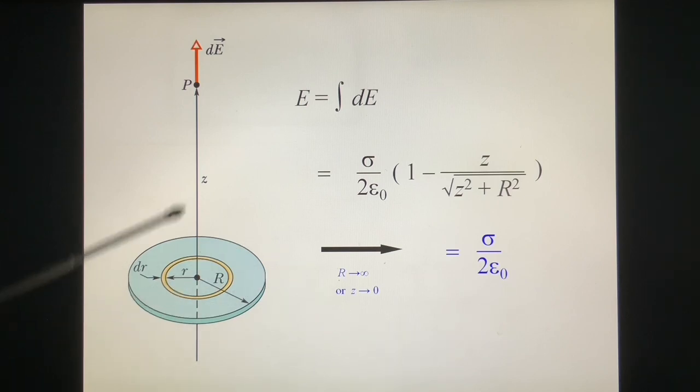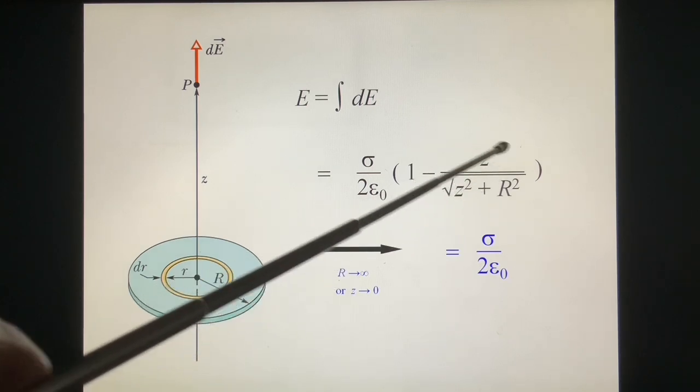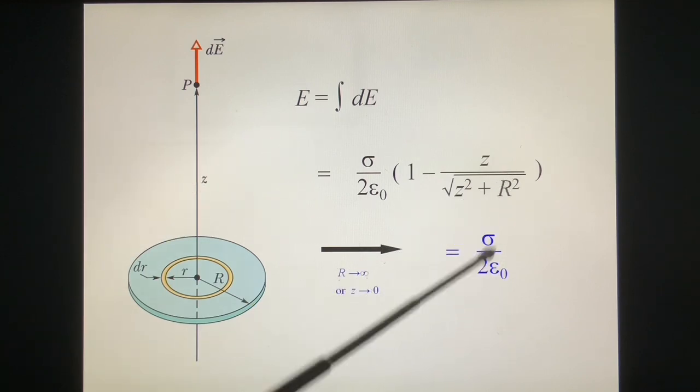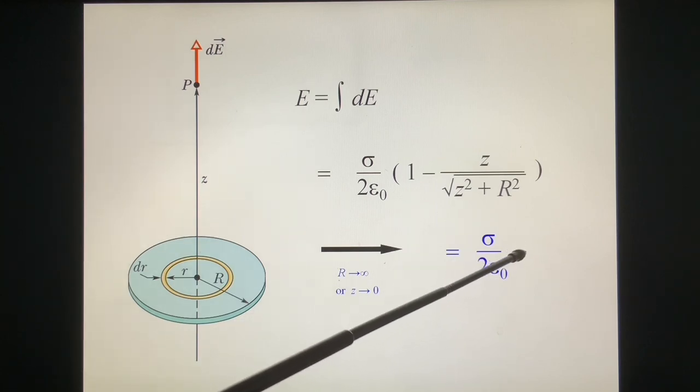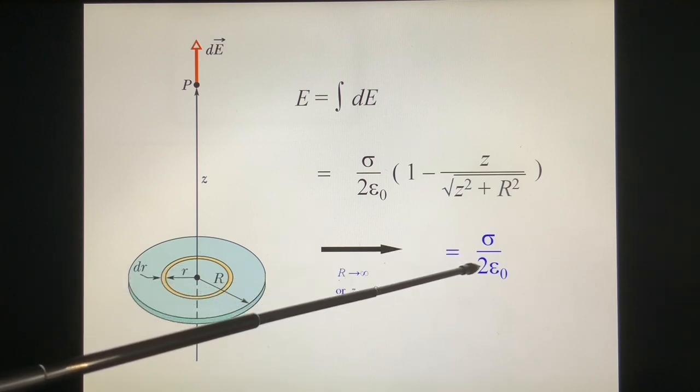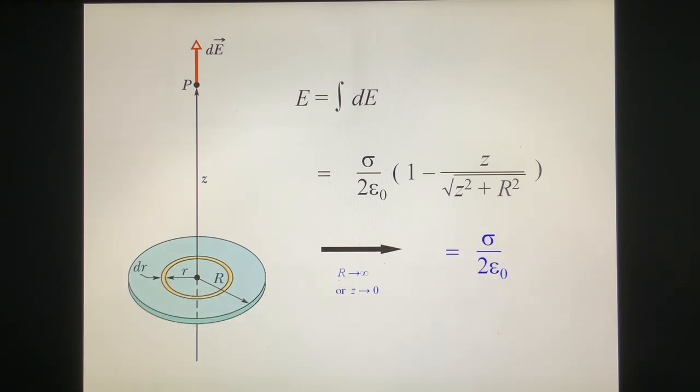So the E becomes σ over 2ε₀. Or Z equal to zero. That means the point P is on the surface. Z is zero. This term is equal to zero. So E equal to σ over 2ε₀. What does this mean? Physically, this means the electric field on the surface of the infinity plane charge is σ over 2ε₀. We will have this conclusion in the next chapter.